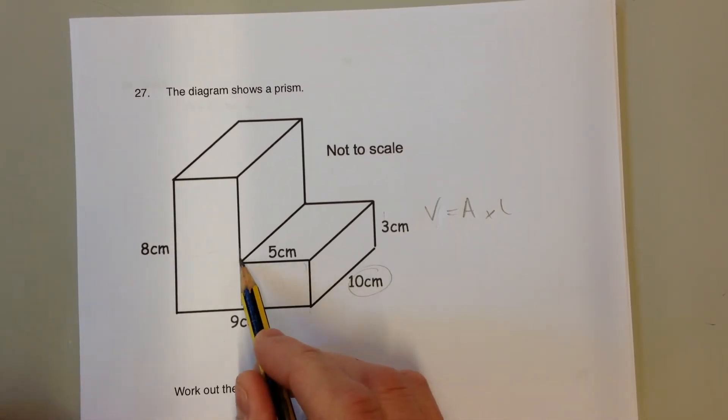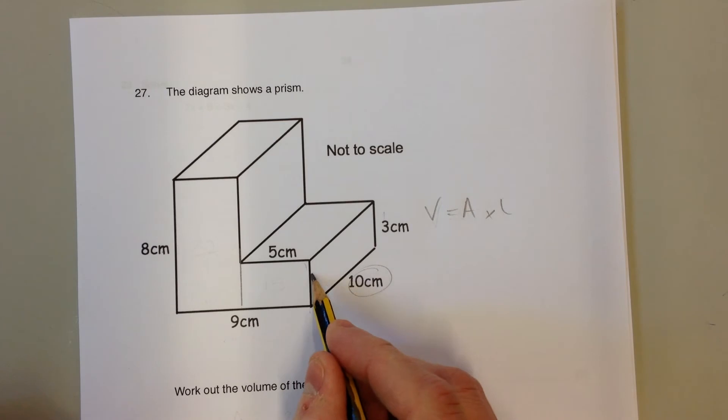This smaller rectangle is 5 centimeters long and 3 centimeters wide, so this has an area of 15 centimeters squared.